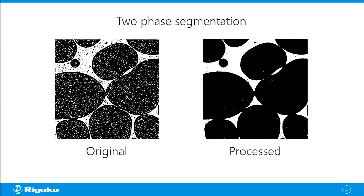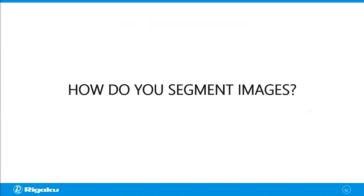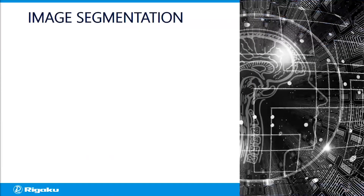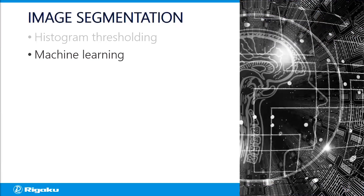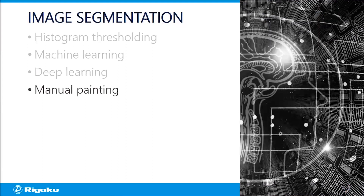Whether or not you process the original image, you're going to do some segmentation. There are a couple of different methods: one is histogram thresholding, which we looked at earlier. You can also use machine learning or deep learning, which is part of machine learning. And you can always do manual painting — there are places for manual painting, but I certainly do not recommend doing this for an entire CT image for obvious reasons.